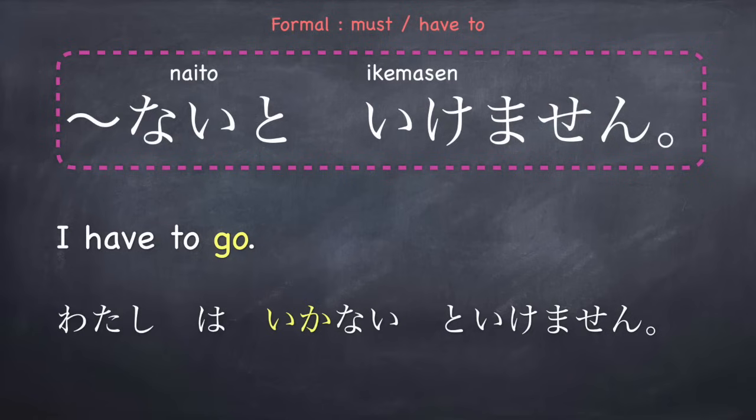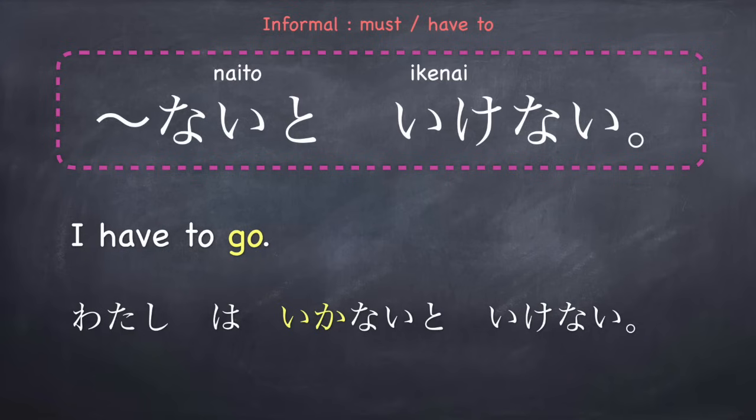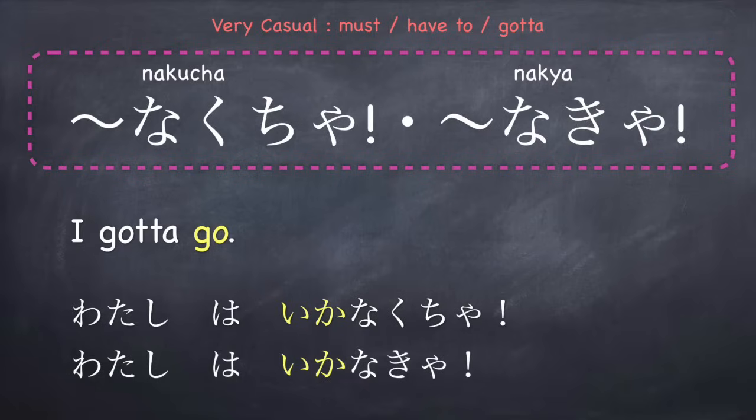This nakereba narimasen is a very formal phrase used in formal situations, like talking to a superior, and is not common in normal settings. Other ways to say this: nai to ikemasen — for example, ikanai to ikemasen. The less formal way is nai to ikenai — ikanai to ikenai. The most casual forms are nakutcha or nakya — for example, ikanakcha or ikanakya — meaning 'I have to go.'